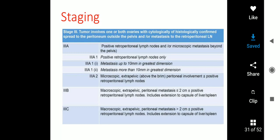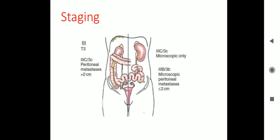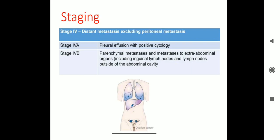Stage 3B: macroscopic extrapelvic peritoneal metastasis ≤2 cm, plus or minus positive peritoneal lymph nodes, including extension to the capsule of liver or spleen. Stage 3C: macroscopic extrapelvic peritoneal metastasis >2 cm, plus or minus positive retroperitoneal lymph nodes, including extension to the capsule of liver. Stage 4 is distant metastasis excluding peritoneal metastasis. Stage 4A is pleural effusion with positive cytology; Stage 4B is extra-abdominal organ involvement.